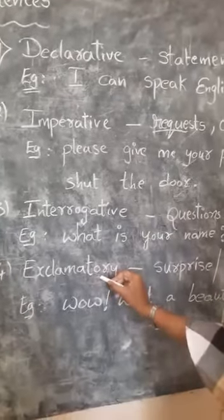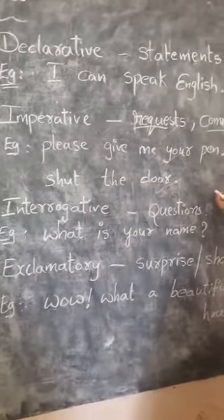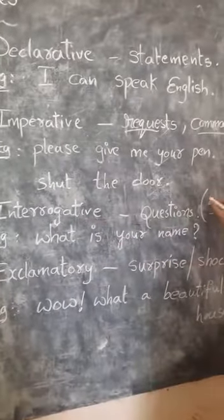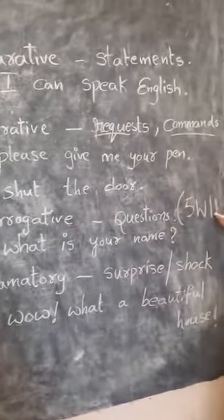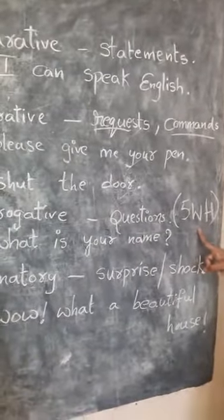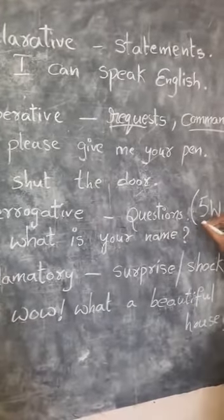Next, we have exclamatory sentence. One more thing I want to say here. Generally, interrogative sentences start with five WH. Interrogative sentences means five WH. All the questions usually start with these five WH and H. Example: